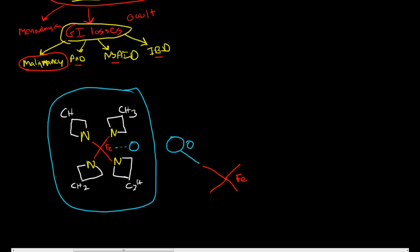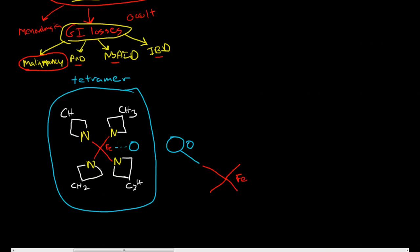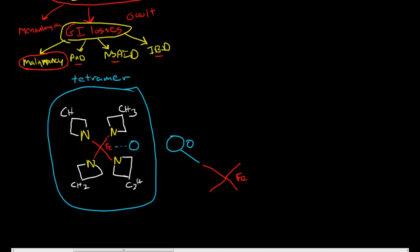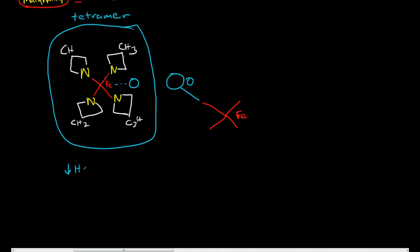There are four heme groups in one molecule of hemoglobin. Hemoglobin is called a tetramer, which means it has four parts — four heme groups connected together with a globin protein — and iron is in the center. So what happens if we don't have enough iron? The body cannot create hemoglobin, so we end up with decreased hemoglobin.